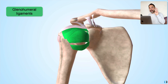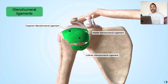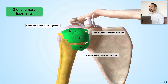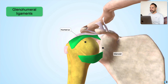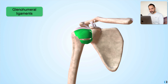We have three glenohumeral ligaments: the superior, middle, and inferior glenohumeral ligament, which naturally describes that there is one at the top, one in the middle, and one at the bottom. These all connect the humerus, or the arm bone, to the glenoid of the scapula, providing stability especially in the movements of shoulder abduction and external rotation.